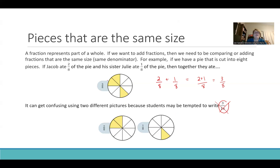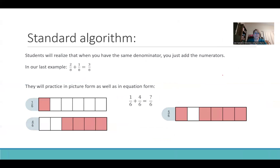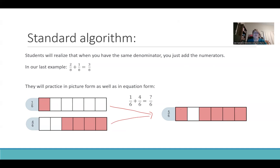You could even have them label what Jacob is eating and what Julie is eating, so we have our total of three-eighths. Once they practice that enough, they won't make the mistake of having a different denominator. They'll realize that even if they have two pictures to represent them, technically what's happening is that we can put them on the same picture. It's this idea of we just add straight across if our denominators are the same.